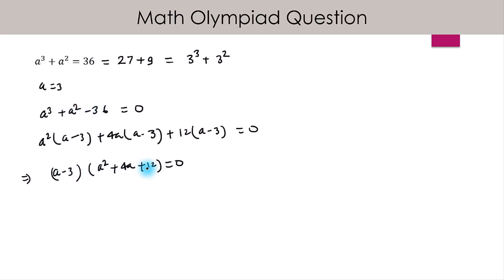(a - 3)(a² + 4a + 12) = 0. This implies a - 3 = 0,